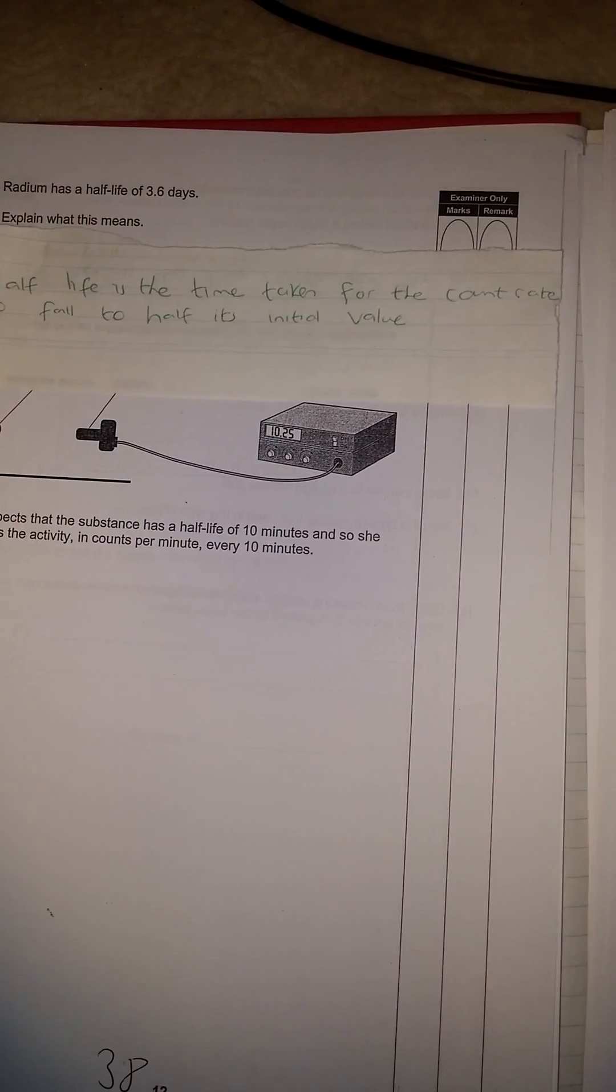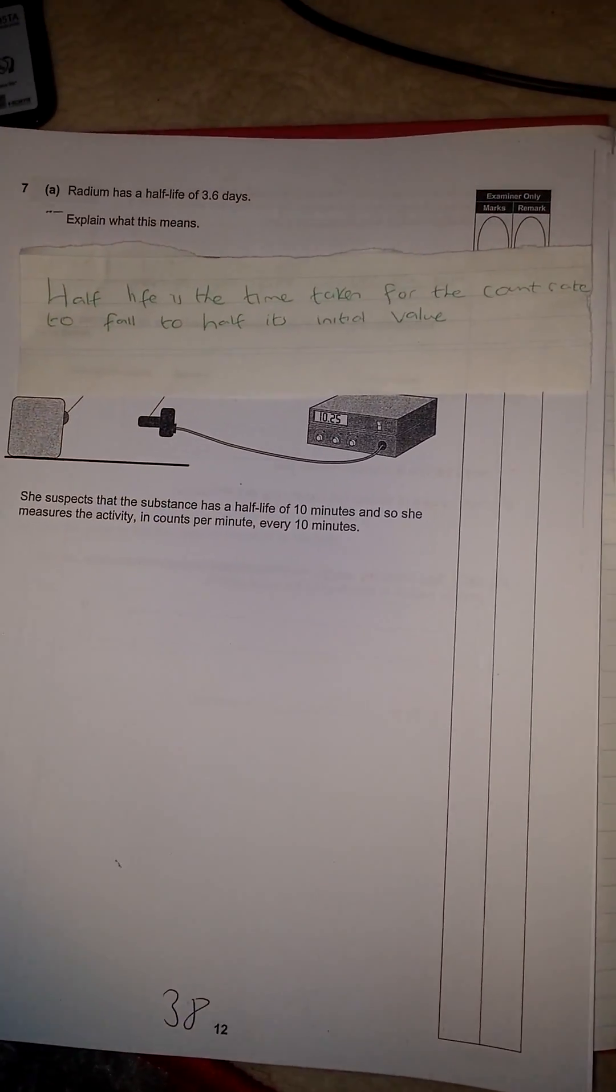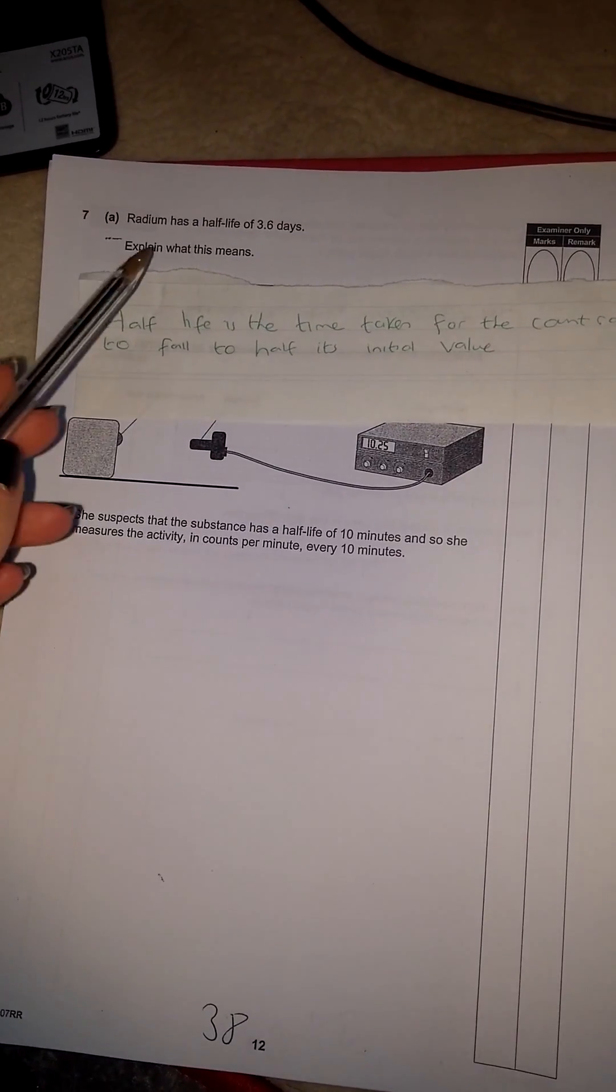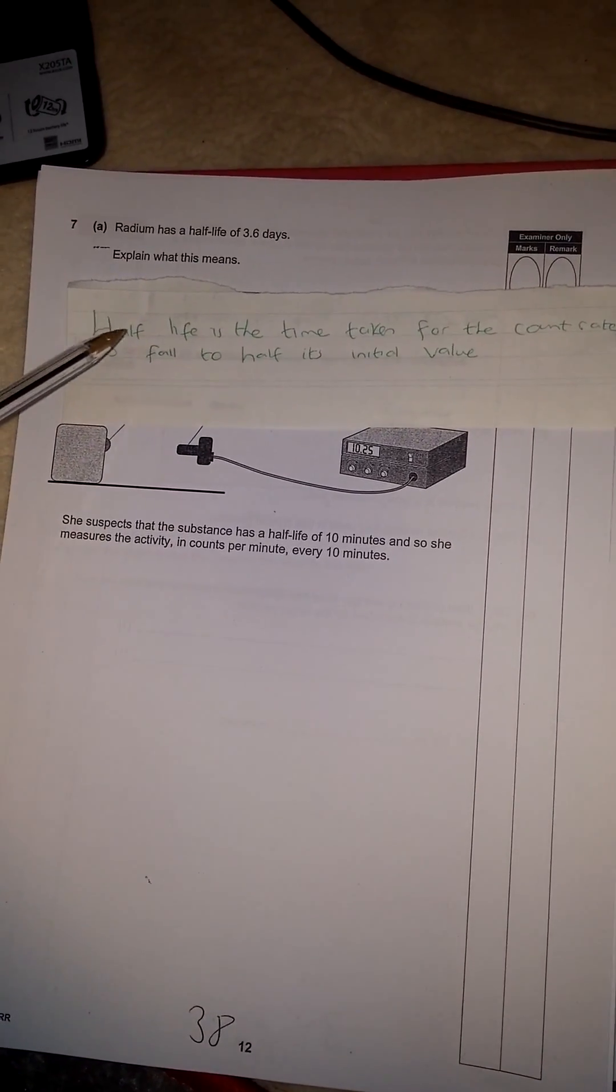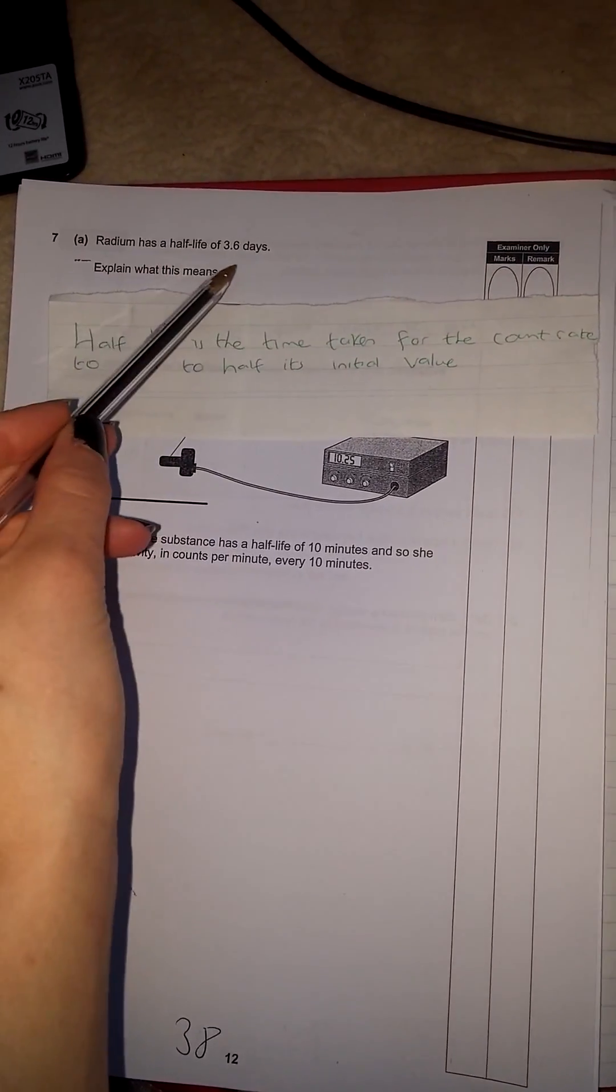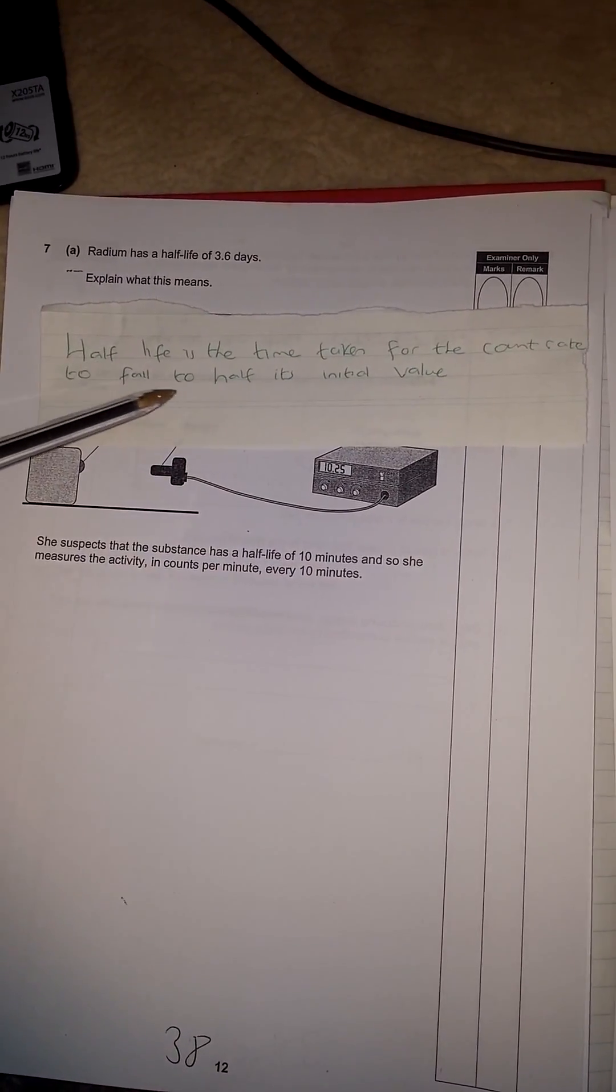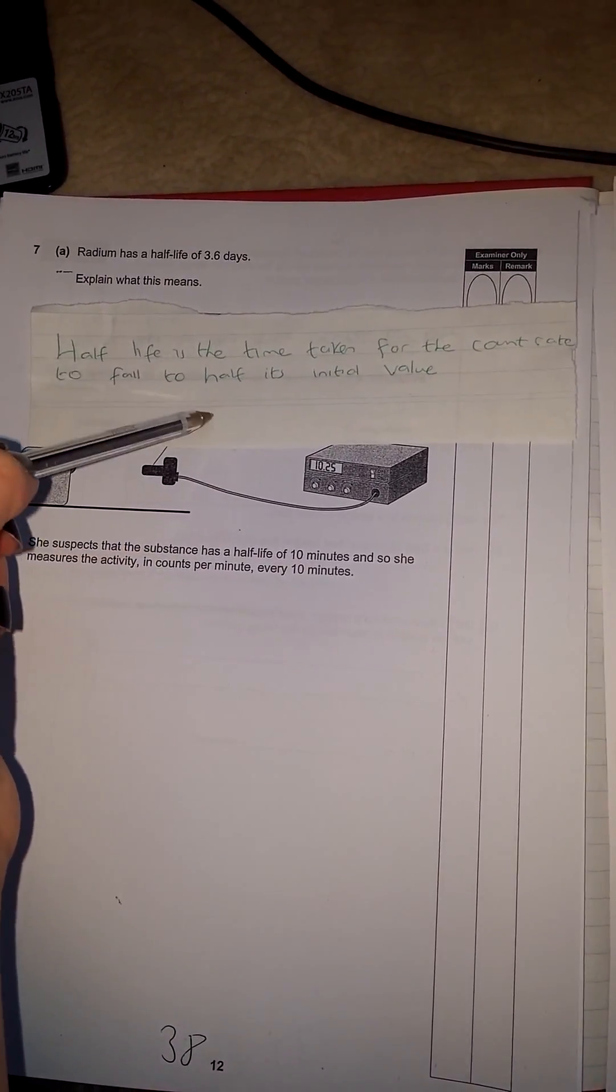So, half-life is the time it takes for the count rate to fall to half its initial value. So in the terms of this one, it means half-life is the time taken, 3.6 days in this case, for the count rate of radium to fall to half its initial value. That is your answer.